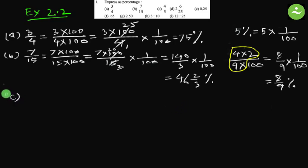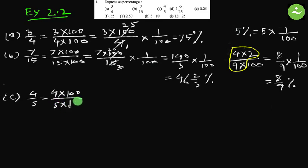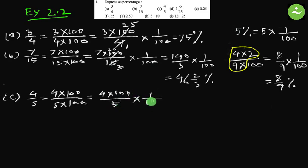Part c: 4 by 5. We multiply both numerator and denominator by 100. 4 multiplied by 100 over 5 multiplied by 100. Now separate 1 by 100: we get 4 multiplied by 100 over 5, then multiplied by 1 by 100. Simplify — divide both by 5: 100 divided by 5 is 20, and 1. So 4 times 20 equals 80. The answer is 80 percent.